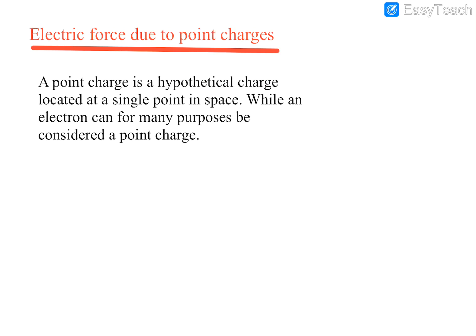A point charge is a hypothetical charge located at a single point in space. If you consider a charge and that charge is located at a point, it means it is not spread — it is almost at a point. Then you can say that the charge is a point charge. Charges which have a very negligible size will almost look like they are at a point.